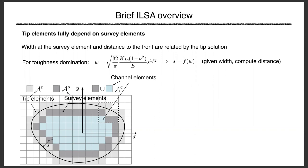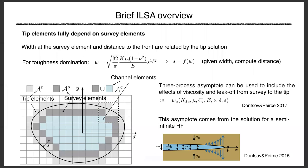The main idea of ILSA is that you use the width of the survey element to determine the distance of the front. For example, in toughness domination, the width near the fracture front follows an equation involving toughness, Young's modulus, Poisson's ratio, and distance s to the front. Knowing the width gives you the distance, and as you pump more fluid and width increases, the front advances.